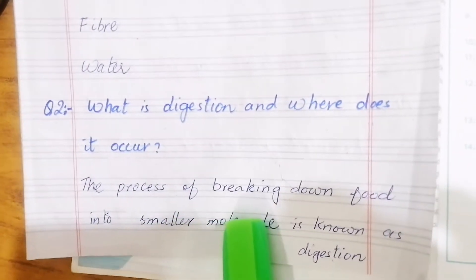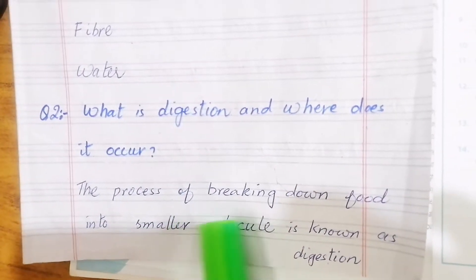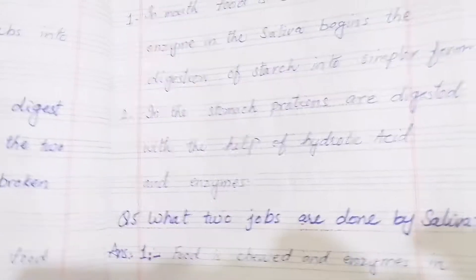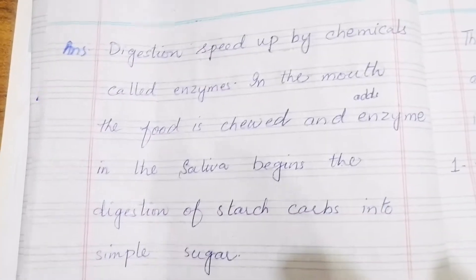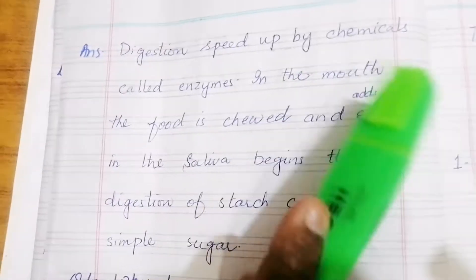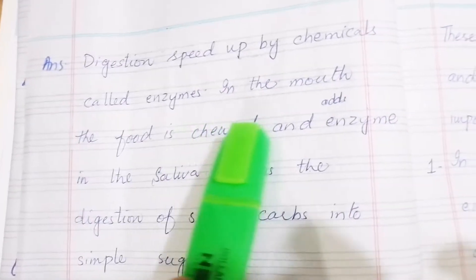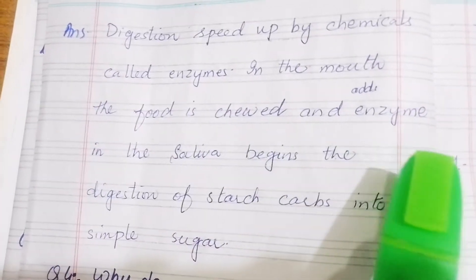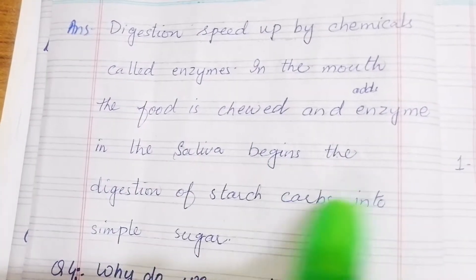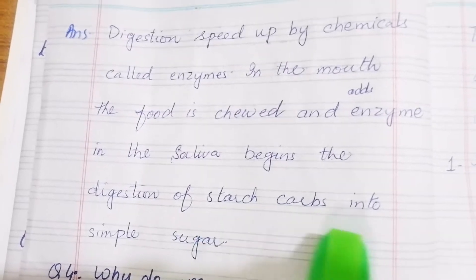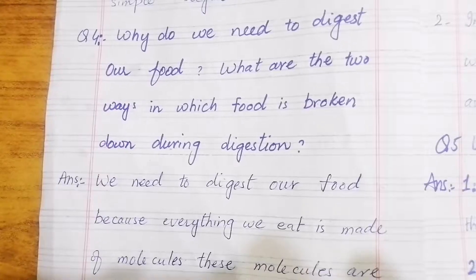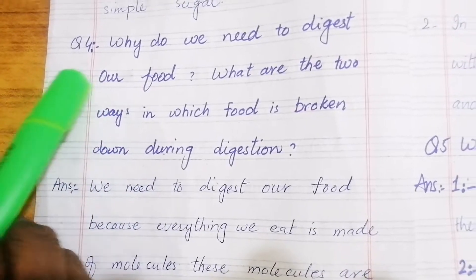The process of breaking down food into smaller molecules is known as digestion. Digestion is sped up by chemicals called enzymes. In the mouth, food is chewed and enzymes in the saliva begin the digestion of starch and carbohydrates into simple sugars.